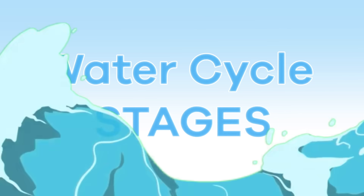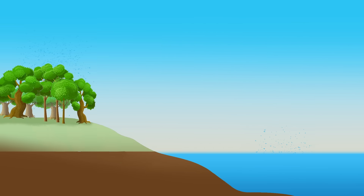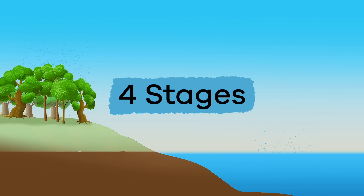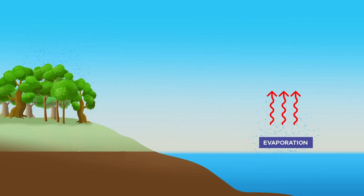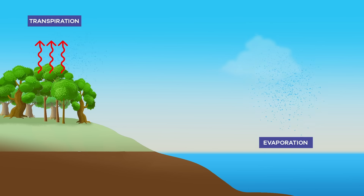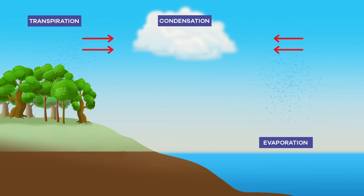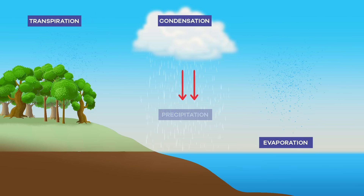Water cycle stages. How does this process happen? It happens through four different stages called evaporation, transpiration, condensation, and precipitation. Let's talk about each in more detail.